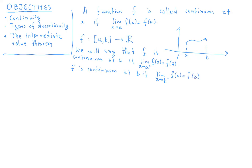For all other points in between we just use the definition given above. In general, f is continuous on I — usually that is going to be an interval, or sometimes a union of intervals — if it is continuous at every point of I.